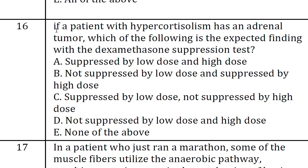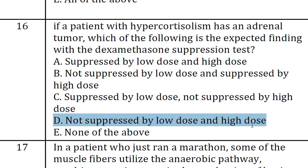If a patient with hypercortisolism has an adrenal tumour, which of the following is the expected finding with the dexamethasone suppression test? The answer is D: not suppressed by low dose and not suppressed by high dose.